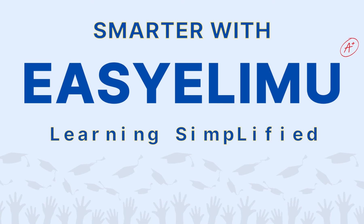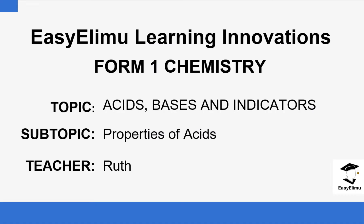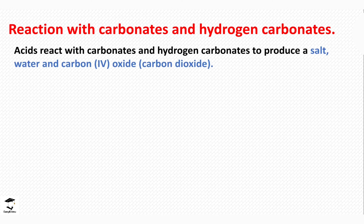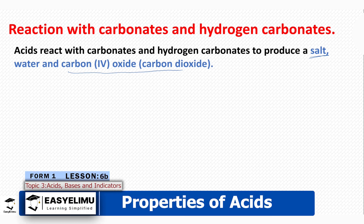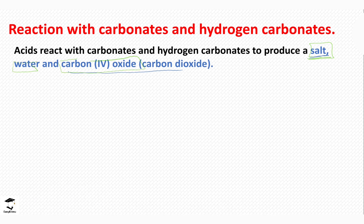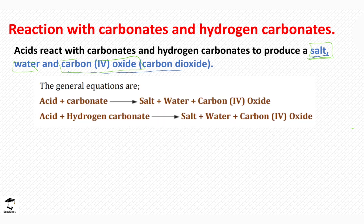So when the neutral products are formed, the phenolphthalein indicator will turn from pink to colorless. Now let's look at more reactions of acids and bases — specifically acids with carbonates and hydrogen carbonates. Acids usually react with carbonates and hydrogen carbonates to produce a salt, water, and carbon dioxide. The products are the same whether you use a carbonate or a hydrogen carbonate: a salt, water, and carbon dioxide.